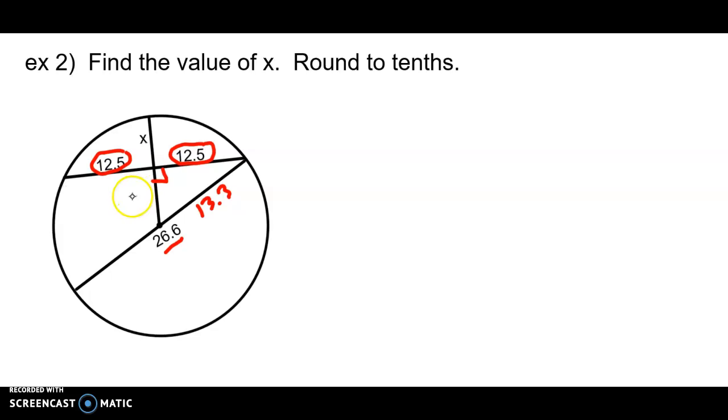So that we have a right triangle. What we're going to do is we're going to find Y, this length right here, using the Pythagorean theorem. And once we have that, we will be able to find X by taking 13.3 and subtracting Y.